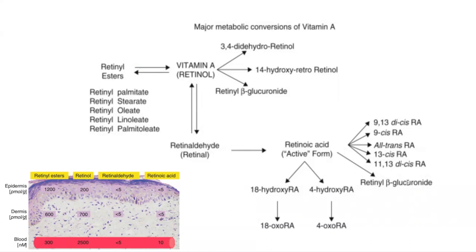The diagram on the bottom left-hand side demonstrates the concentration of different forms of vitamin A derivatives in the skin and in the blood. In the epidermis, the highest concentration is retinol esters, whereas in the dermis the highest concentration is retinol, and in the blood the highest concentration is also retinol.